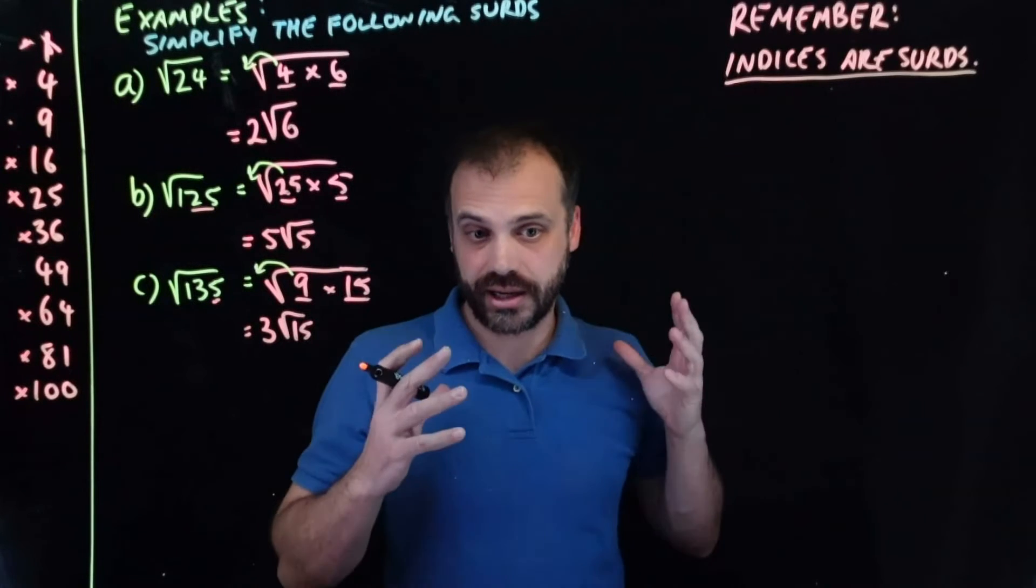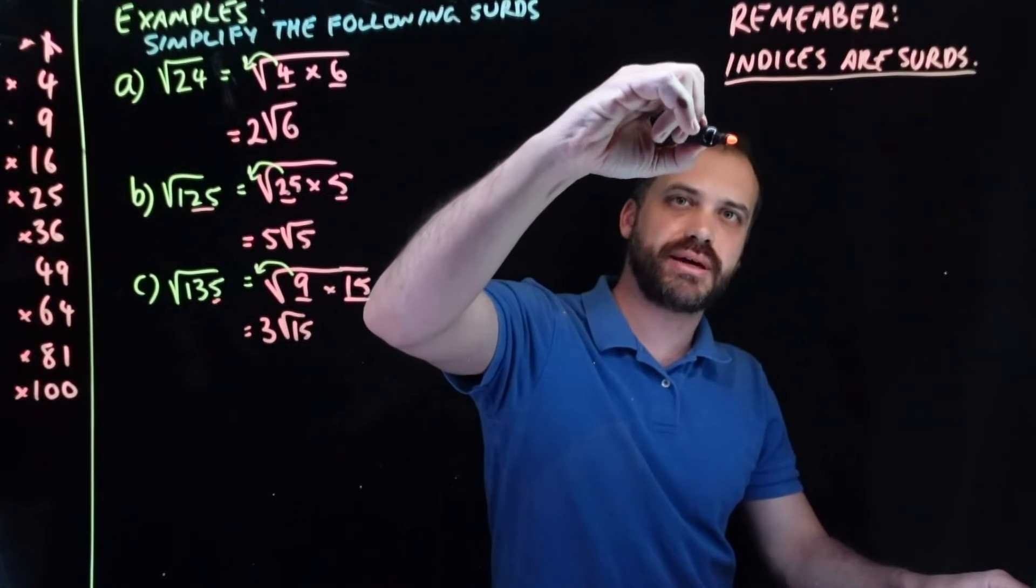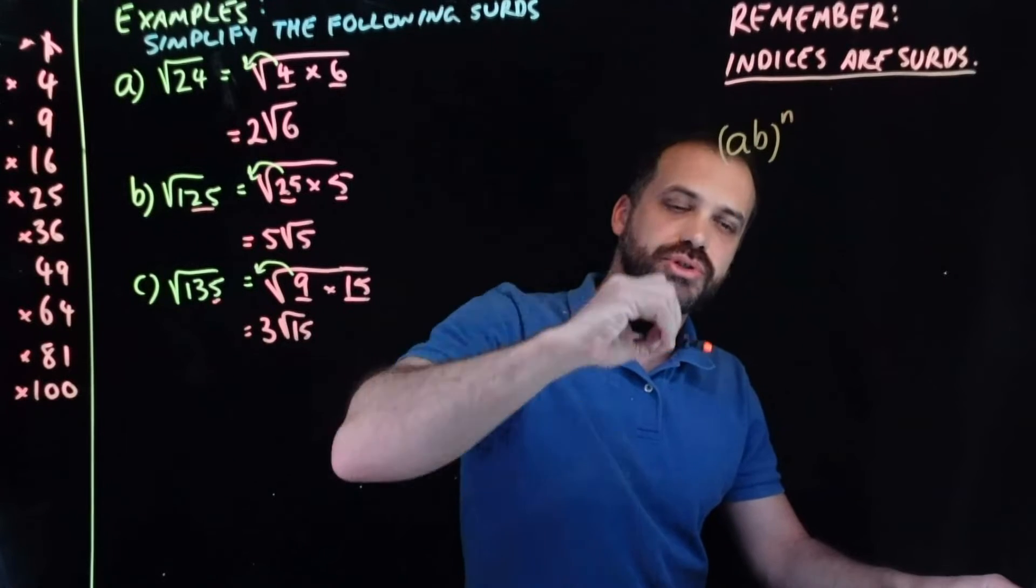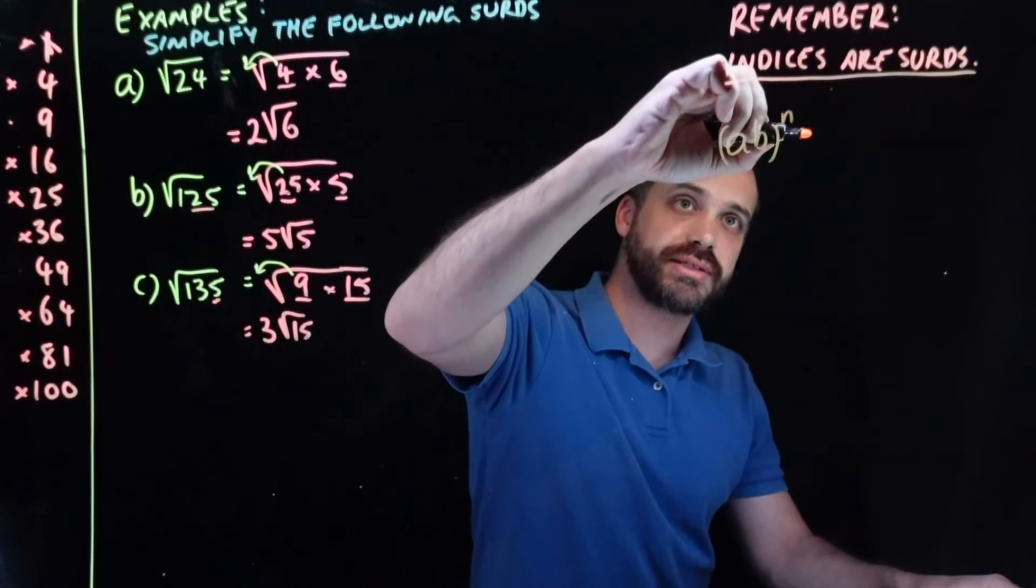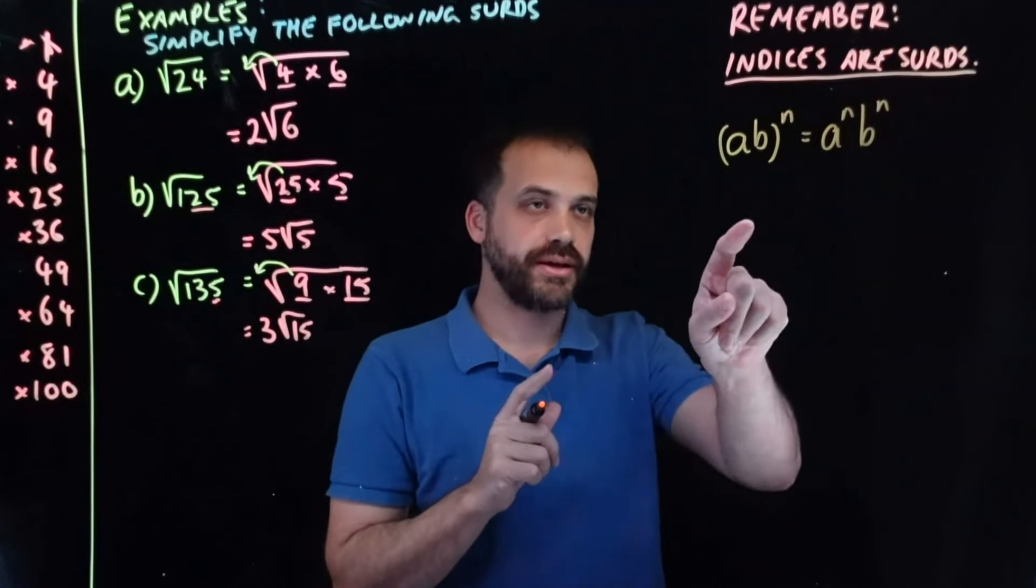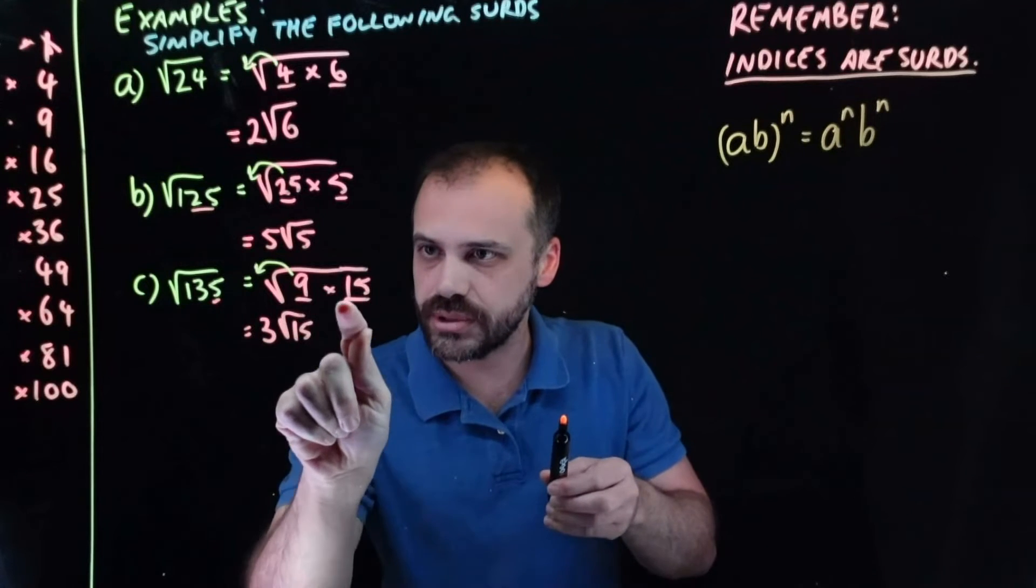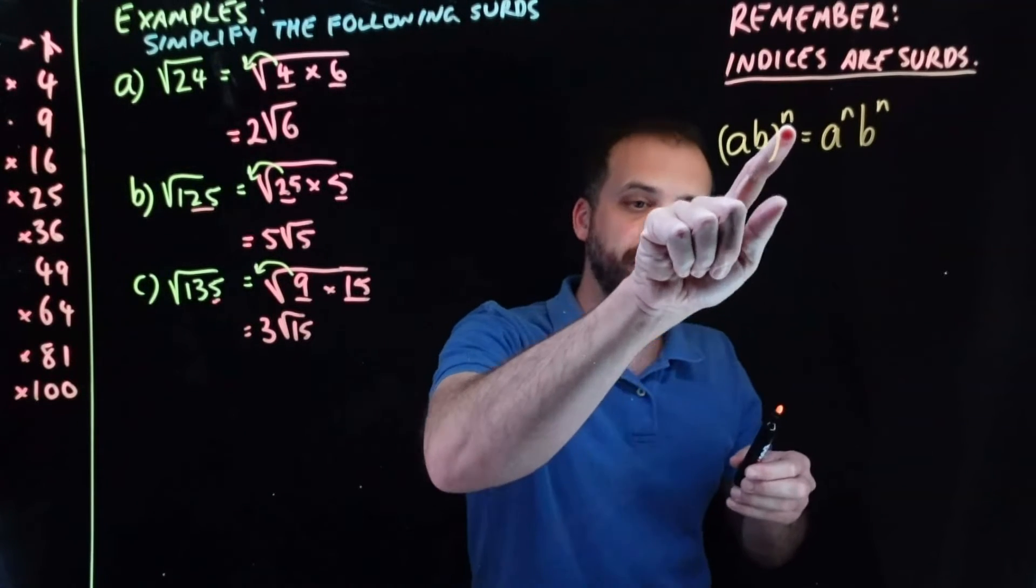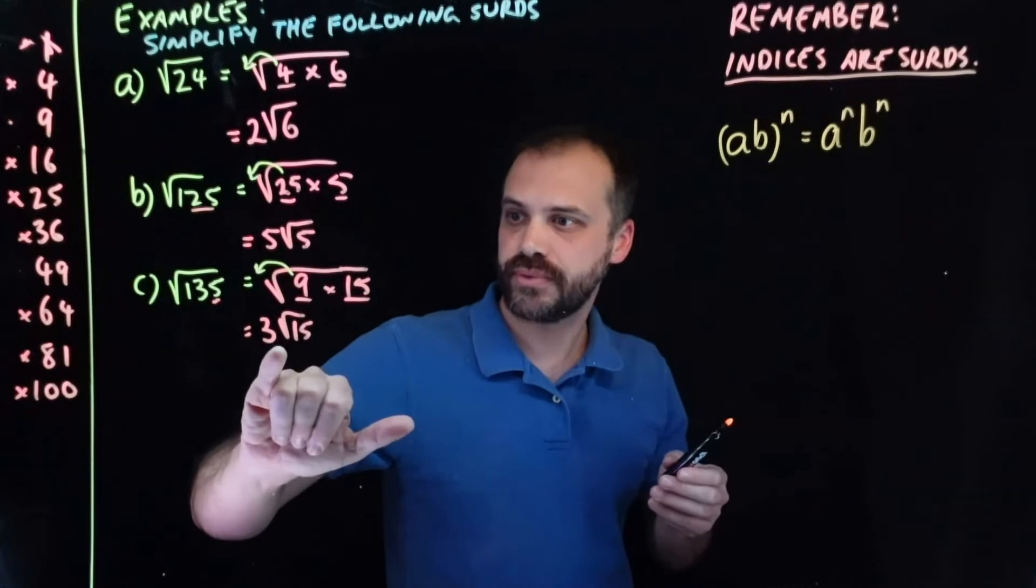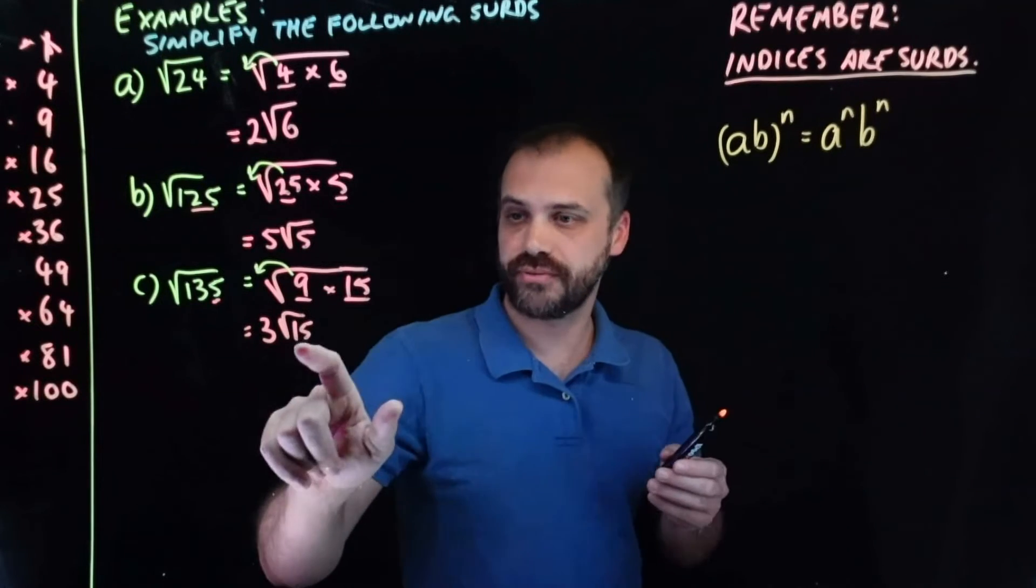It works because indices are surds. And you already know one of your index laws says something like this. If you've got two numbers multiplied together and you raise them to a power, that's the same as a to the n times b to the n. So, a times b, two numbers multiplied together to the power of something. Remember, a square root is a power, is equal to the square root of that thing or the power of that thing, the power of that thing.